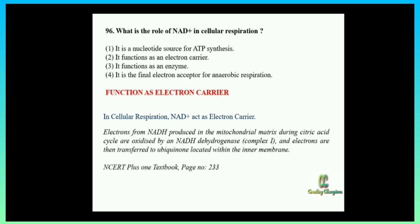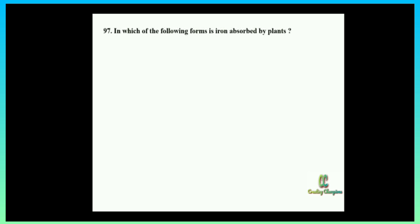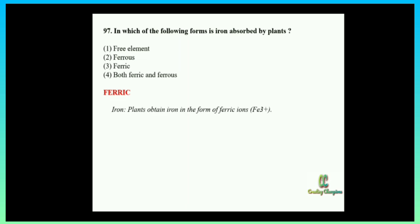Next question: in which of the following forms is iron absorbed by plants? Option one: free element; option two: ferrous; option three: ferric; option four: both ferric and ferrous. This is a direct question from your textbook. The answer is ferric. In the mineral nutrition chapter, it states that plants obtain iron in the form of ferric ions.